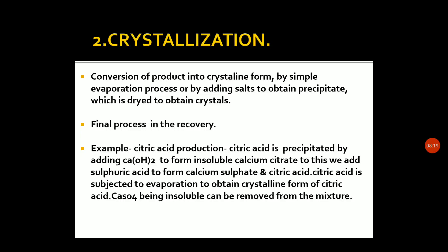When we convert the product into crystalline form, we add salt like ammonium sulphate, then we precipitate it. When we precipitate the product, we dry it into the crystalline form. We add a precipitating agent in the fermentation broth, then add ammonium sulphate, precipitate it, and dry it into crystalline form.